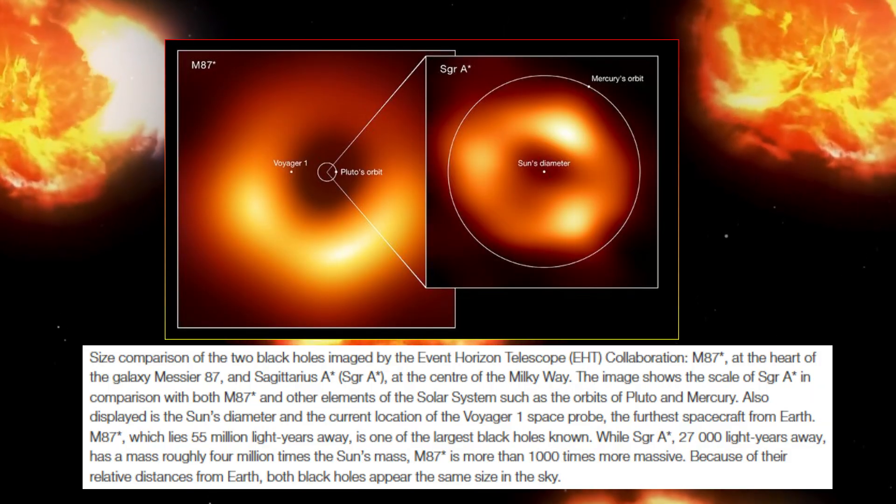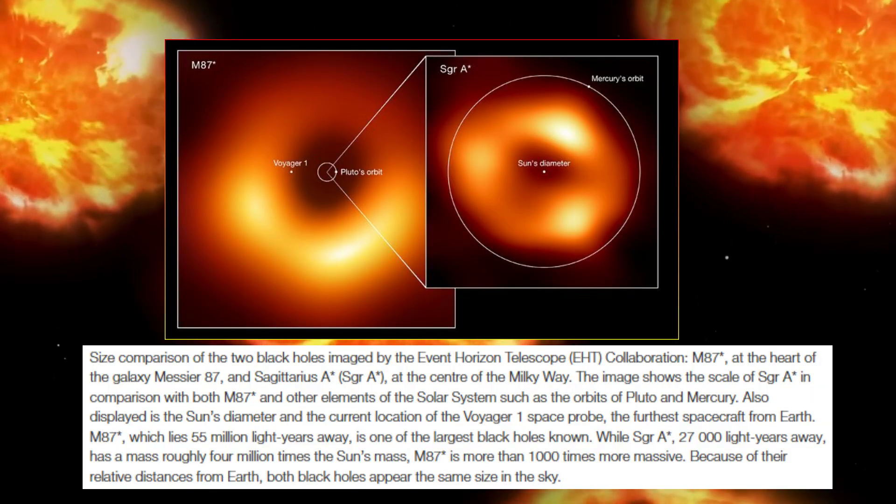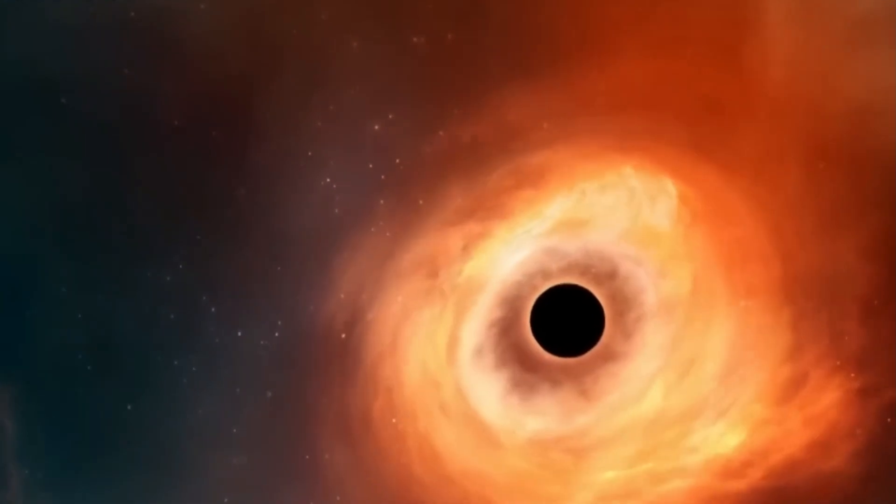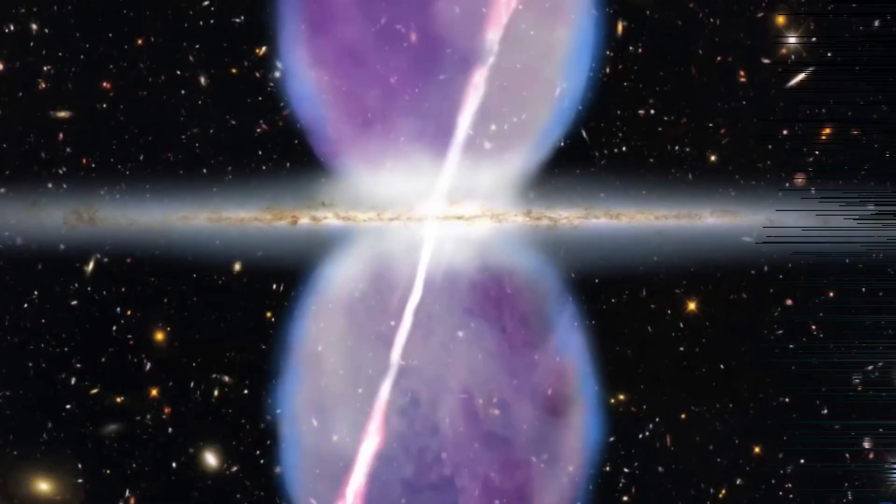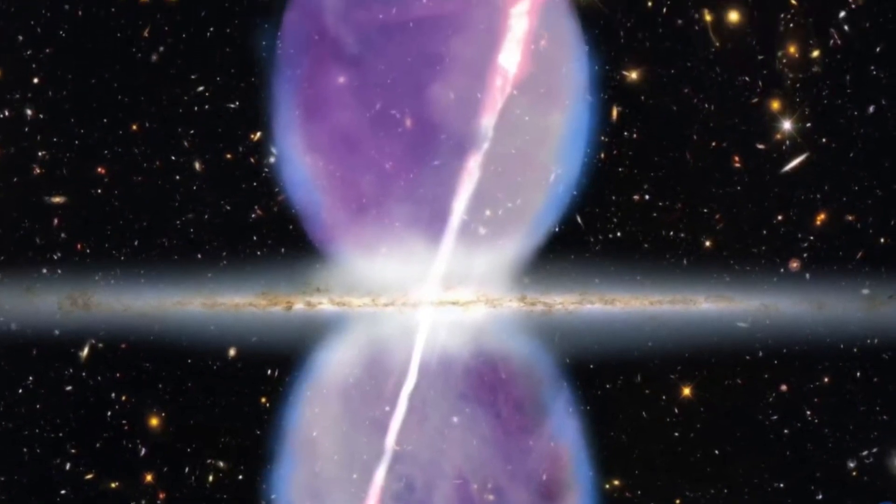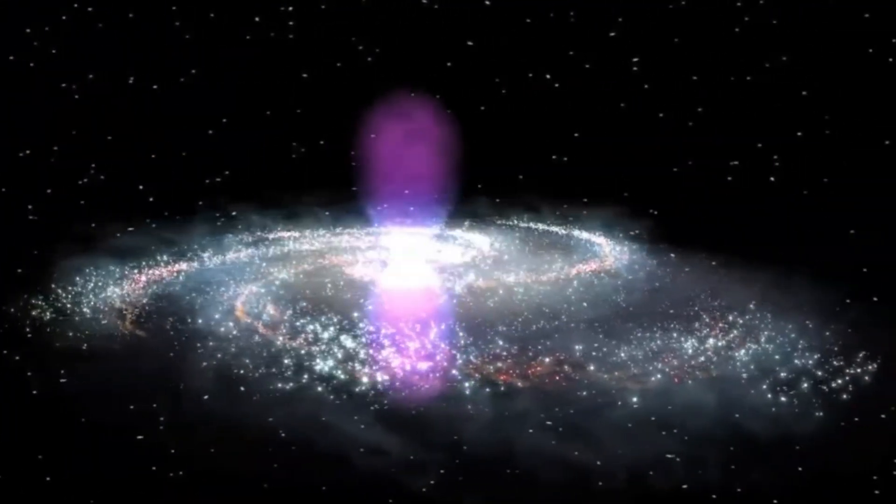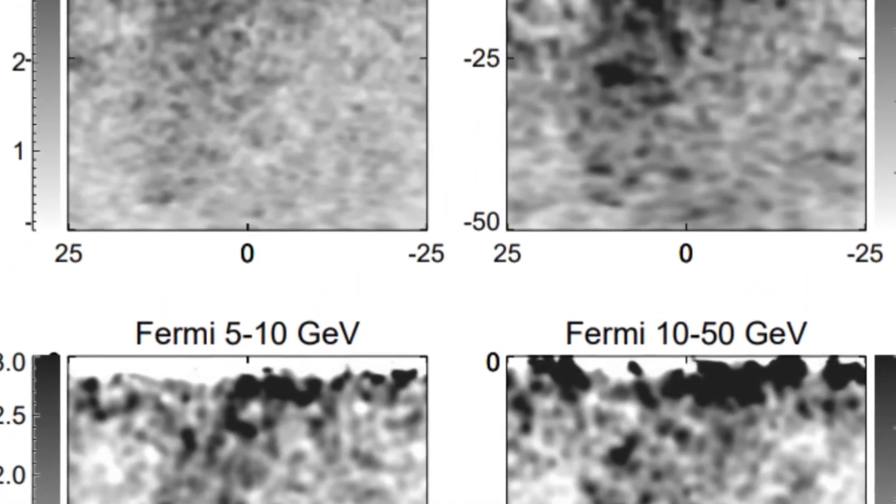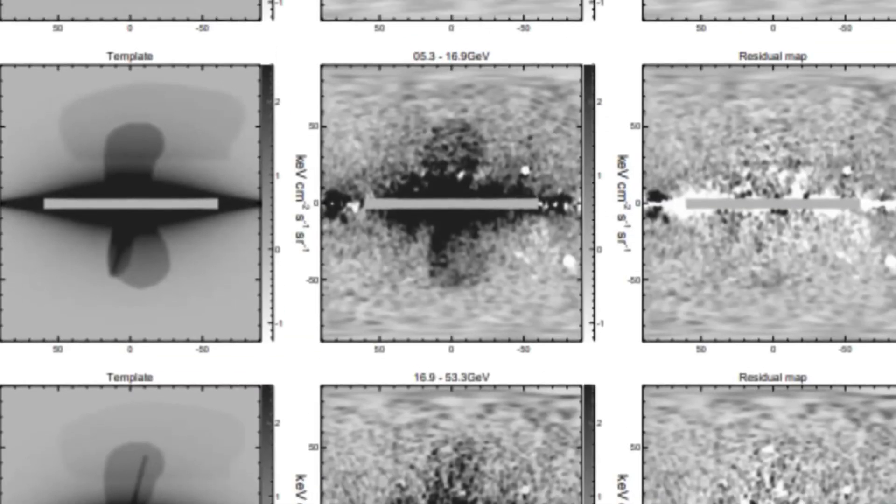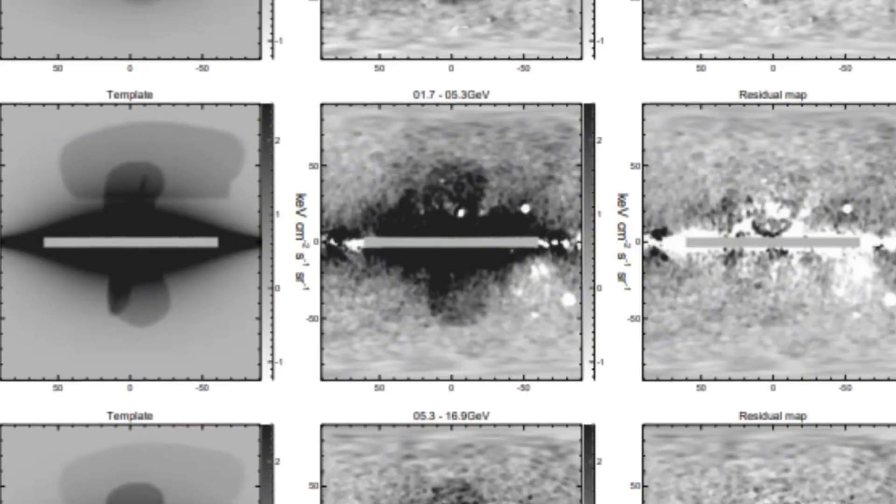What caused them? A violent eruption from Sagittarius A, the supermassive black hole at the center of our galaxy, may be responsible. Some scientists believe these bubbles are the remnants of a cataclysmic event that reshaped the Milky Way millions of years ago. Others suggest they could be linked to bursts of star formation, or even mysterious unknown cosmic processes.